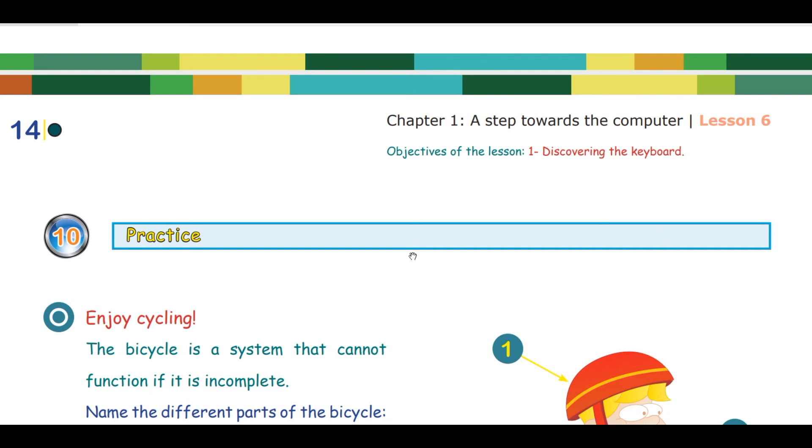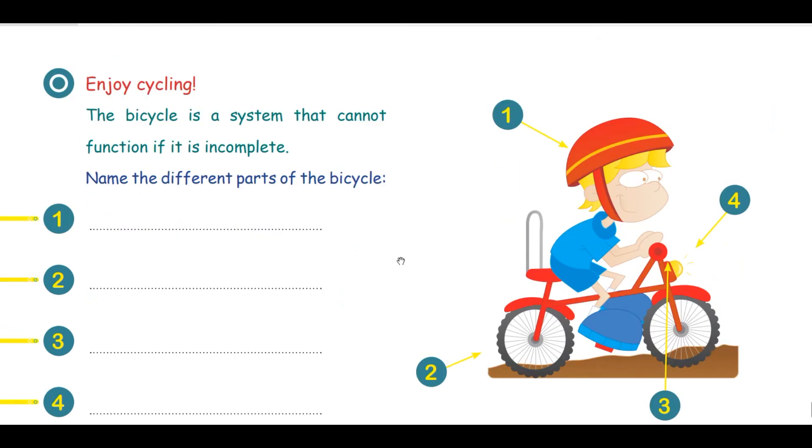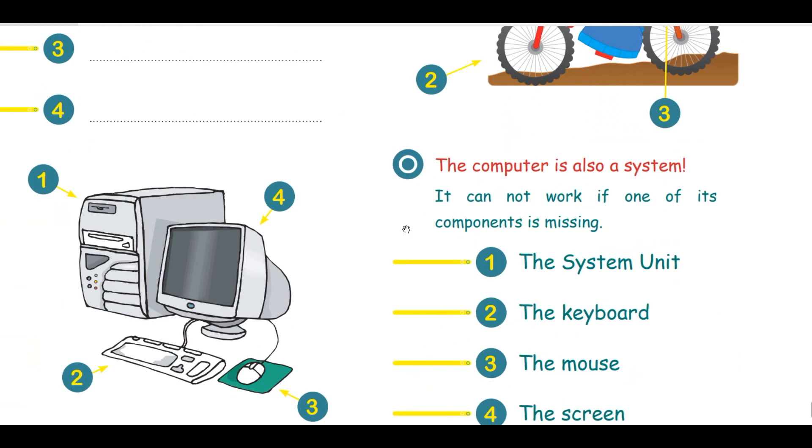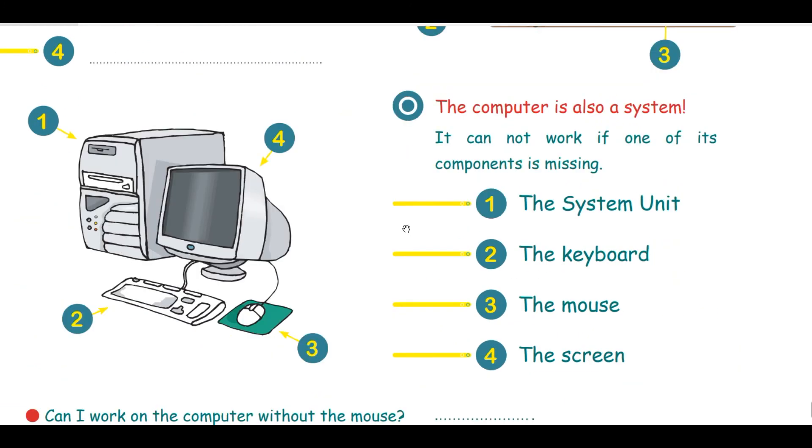Then pass to a short exercise making a comparison between a bicycle and a computer to explain what a system is. With this bicycle example, you can ask them to describe the different elements of the bicycle. After answering these questions, you will pass to the computer to explain the different components.